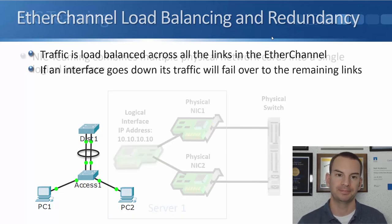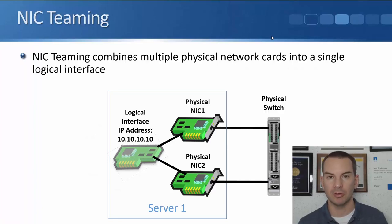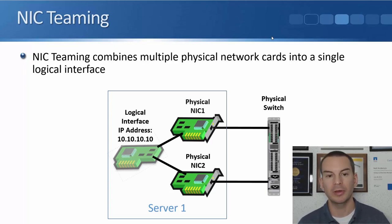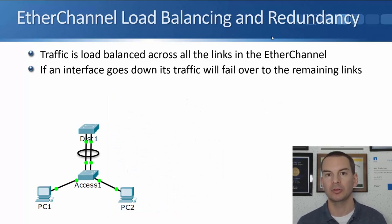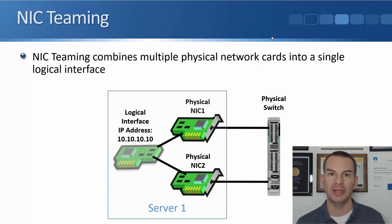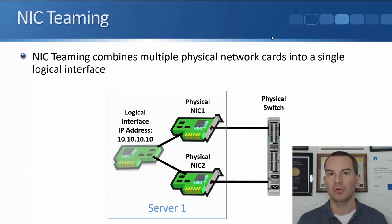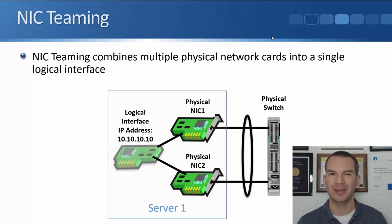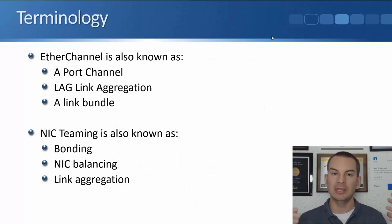We can do basically the same thing on our servers with NIC teaming. EtherChannel bundles multiple physical ports into a single logical port on inter-switch links; with NIC teaming we bundle multiple physical network cards into a single logical interface. We get the same load balancing and redundancy benefits, and because the operating system sees it as a single interface, there's just one IP address, which makes things much more convenient and simple to configure.